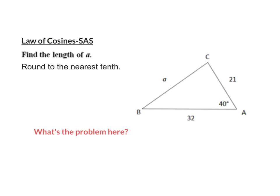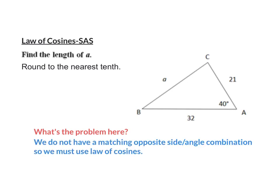When the angle is in between two given sides, I'm forced to use law of cosines. And when I show you law of cosines, you're going to probably moan and groan a little bit because it's kind of ugly. But I'm going to show you a way that I think makes it a little more simple. The problem is we don't have the matching opposite side-angle combination, so we have to use law of cosines.